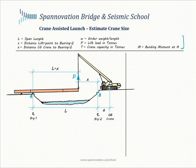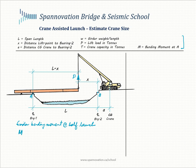The first thing we're going to do is write down the girder bending moment at half launch. This is when half the girder system has been launched, and at this point we would assume that the crane is not providing any tip support. So that moment — we'll call it M max — because we would assume that the girder system would not see a demand greater than this throughout the entire launch process.